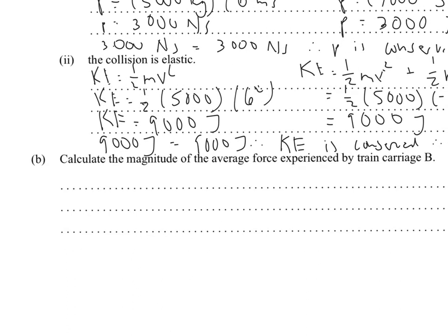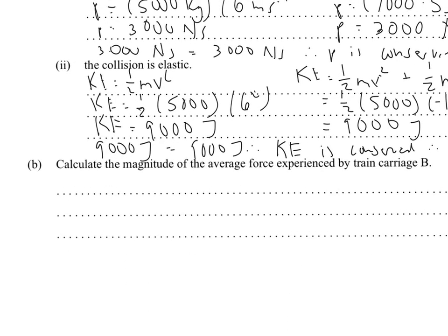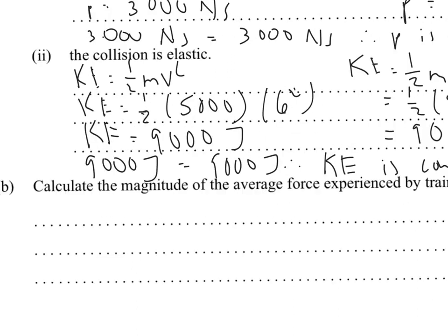And the last part, it says to calculate the magnitude of the average force experienced by train carriage B. The equation we're going to use to calculate the average force is F force equals impulse over time. If you look at the units, you have force in newtons. Impulse is newtons second over second. These are going to cancel out and give newtons. So, the impulse is the change in momentum.